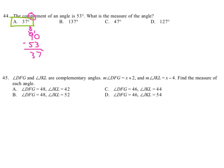Number 45, DFG and JKL are complementary, not supplementary. They add to 90.